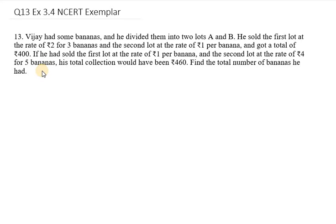Hello everyone, let's start with question number 13. In this problem, Vijay had some bananas and he divided them into two lots A and B. He sold the first lot at the rate of ₹2 for 3 bananas and the second lot at the rate of ₹1 per banana, getting a total of ₹400. Let's make equations out of this. We need to find the total number of bananas he had.